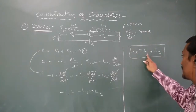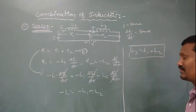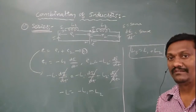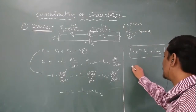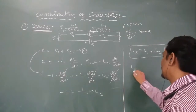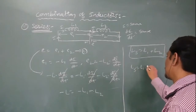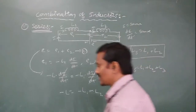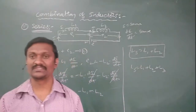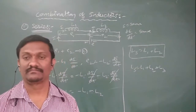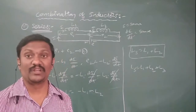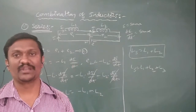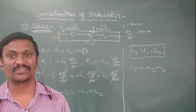L1 is the first inductance and L2 is the second inductance; the effective inductance becomes L1 plus L2. Similarly, if three inductors are joined, the effective inductance becomes L1 plus L2 plus L3. For four inductors joined in series, it becomes L1 plus L2 plus L3 plus L4. So in series combination, the effective inductance increases. That is the first kind of combination of inductors — series combination.